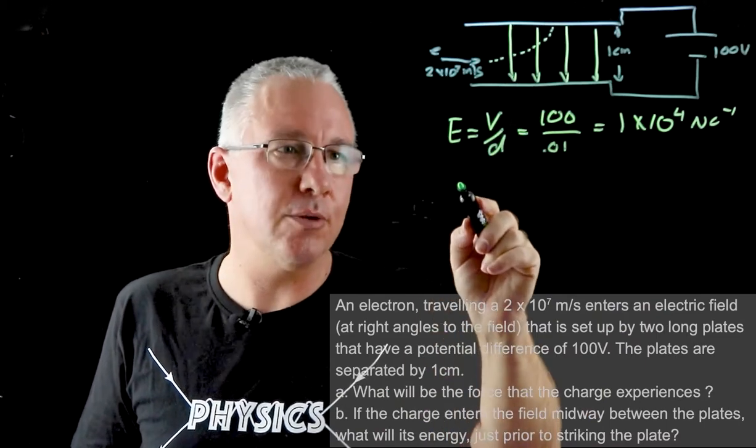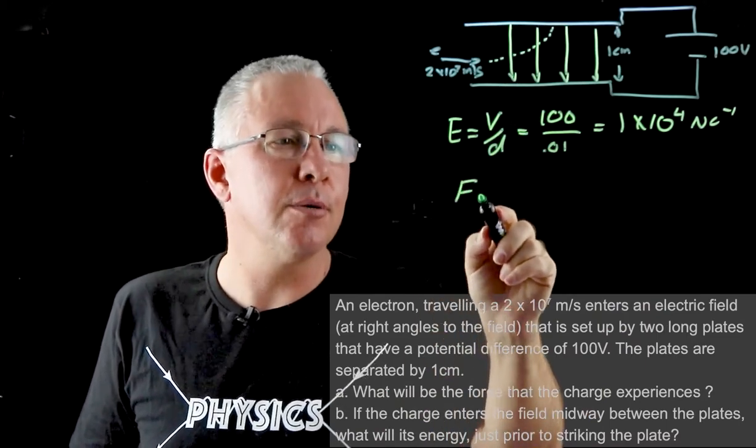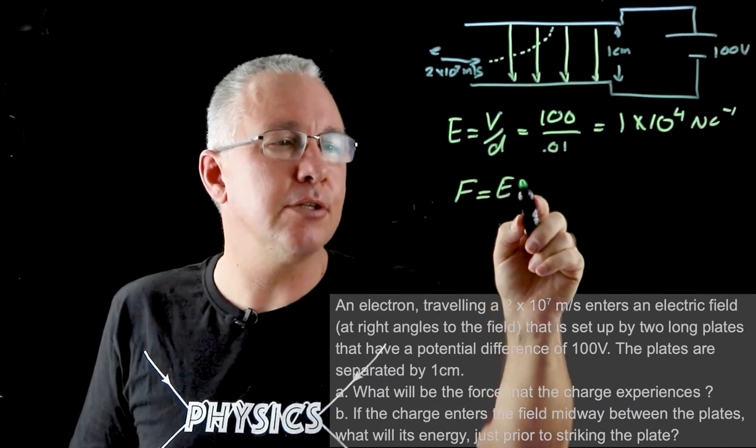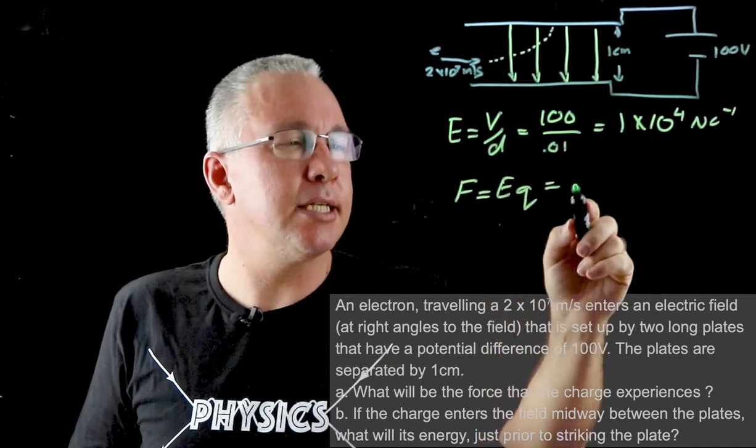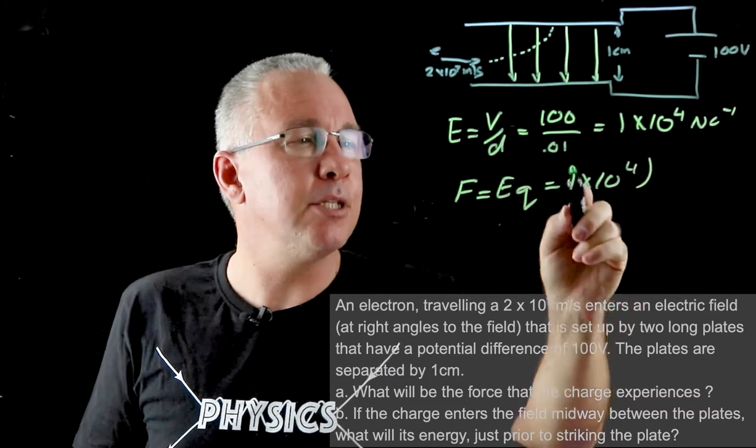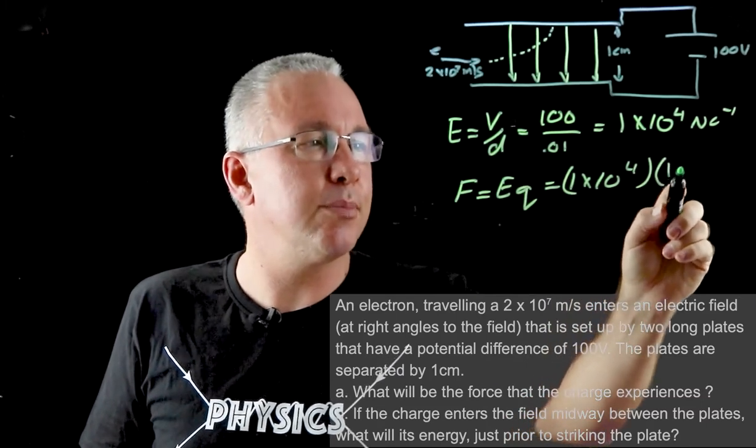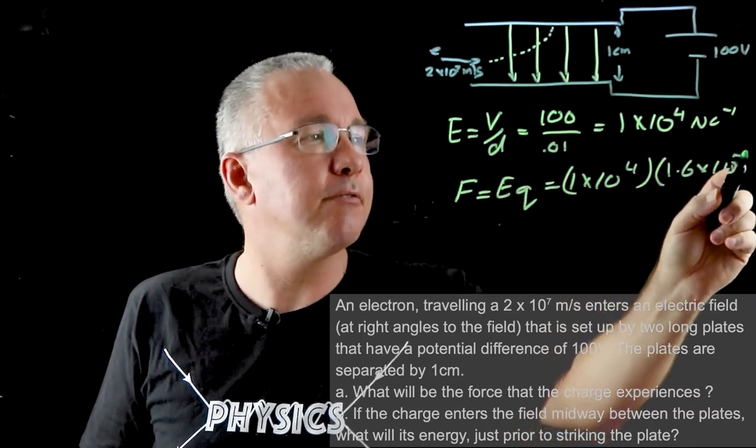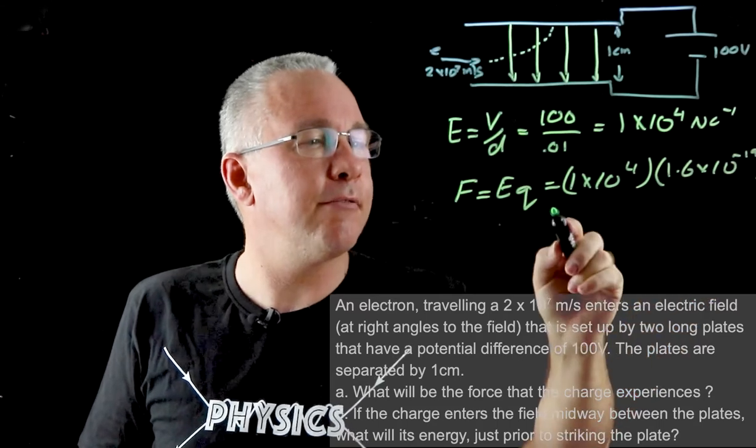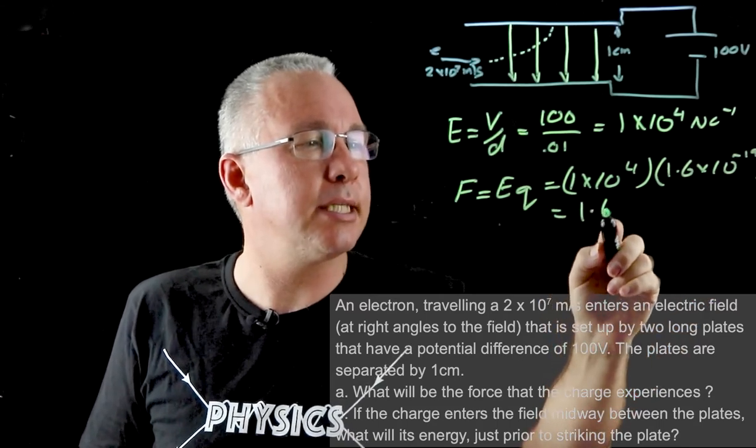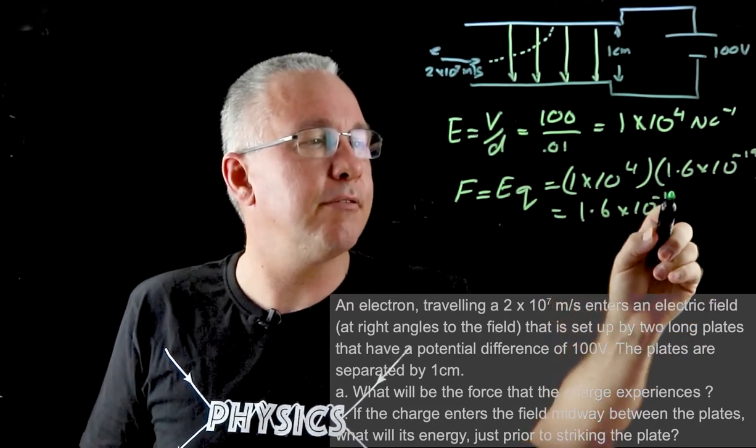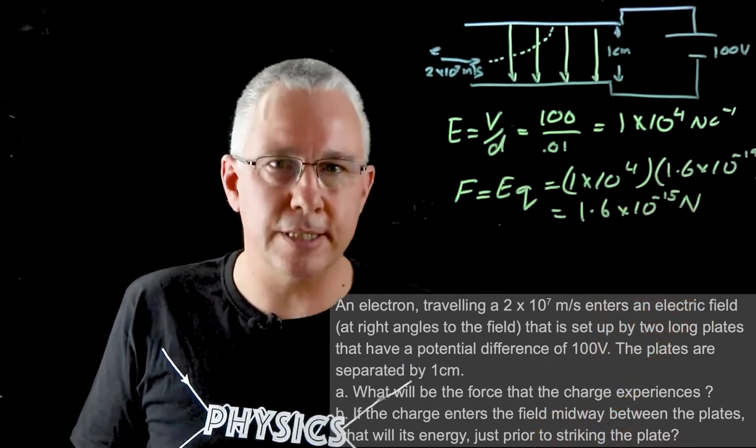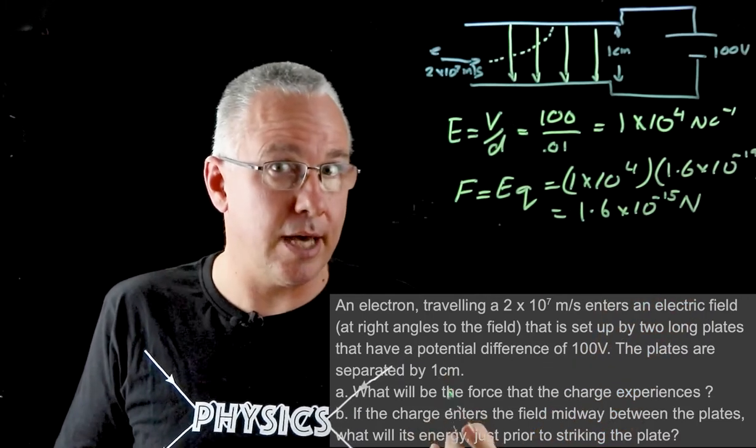We now know how to work out the force because the force in terms of the electric field is equal to Eq, and so that is now given 1 by 10 to the power of 4 multiplied by my charge which is 1.6 by 10 to the power of negative 19, and we therefore get an answer of 1.6 by 10 to the power of negative 15 newtons. So there you have that problem.